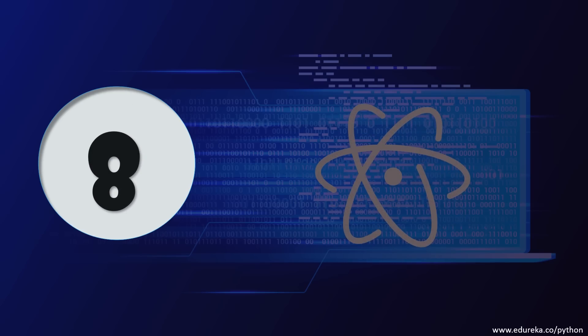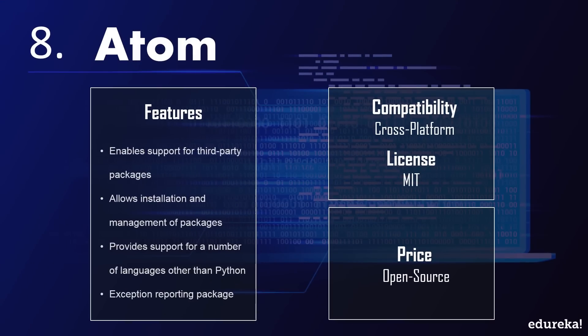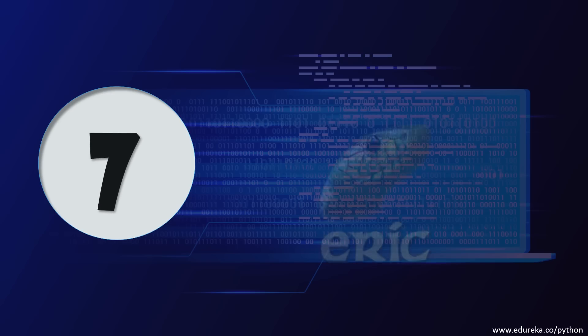Taking the 8th slot is Atom. Atom is an open source cross-platform IDE built using web technologies and is based on the Electron framework built by GitHub. It provides remarkable features such as support for third-party packages and themes to format the editor. Atom's APM allows installation and management of packages, supports multiple languages including C, C++, and Java, and also consists of an exception reporting package.